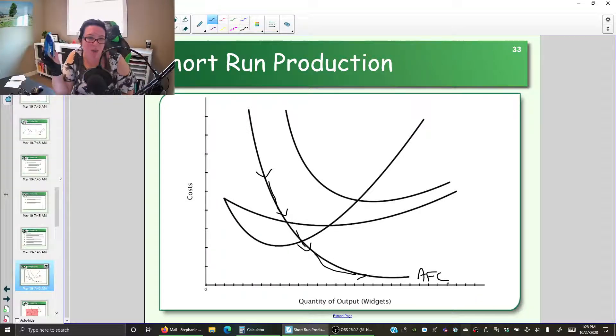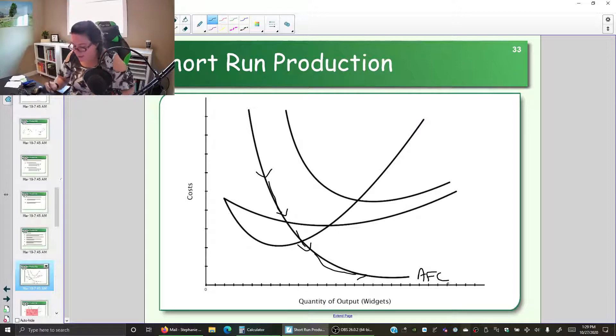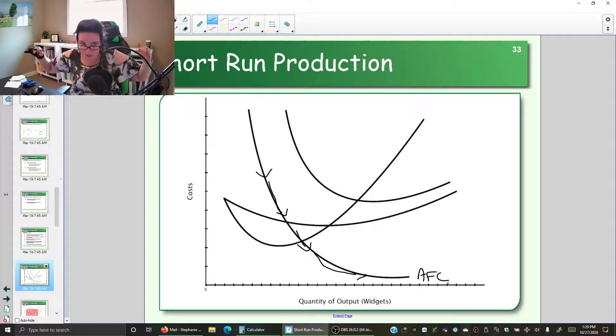If we have a $10 stapler, the more widgets we produce, the more we can take that $10 and put a little bit of its cost into each widget. So here we have our average fixed cost, continually declining because fixed cost doesn't change and we're spreading it across more units.